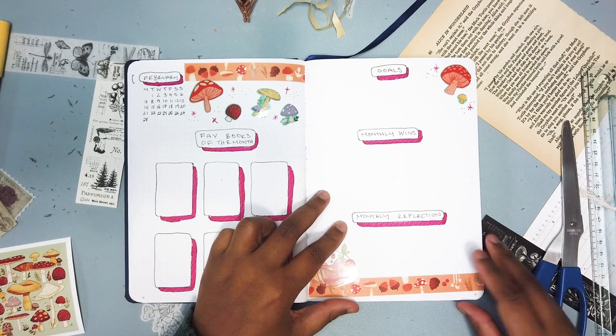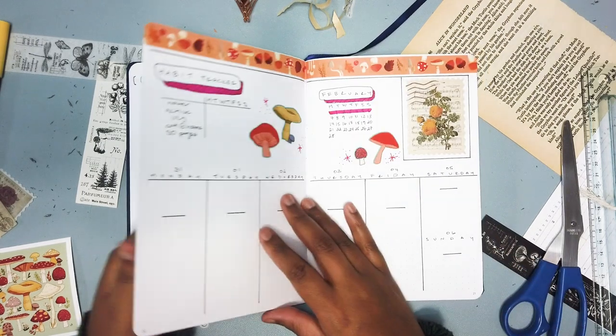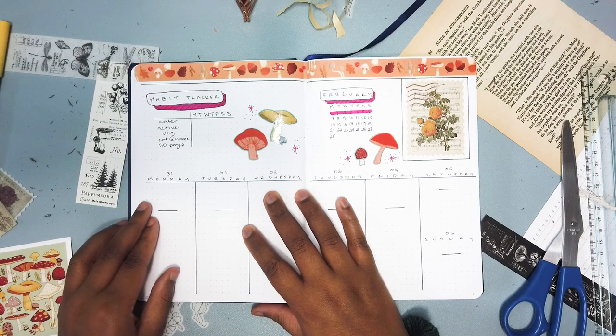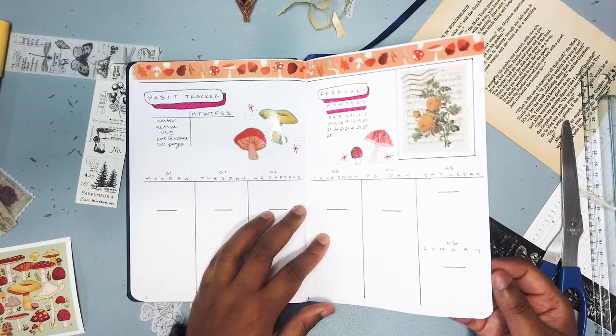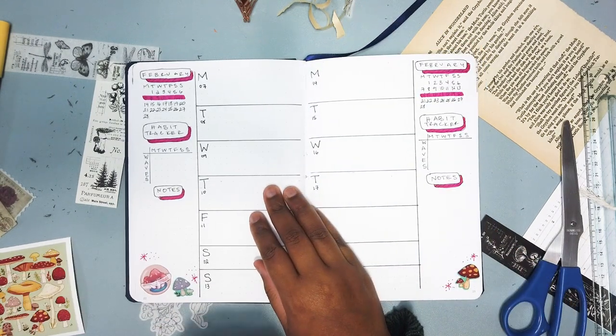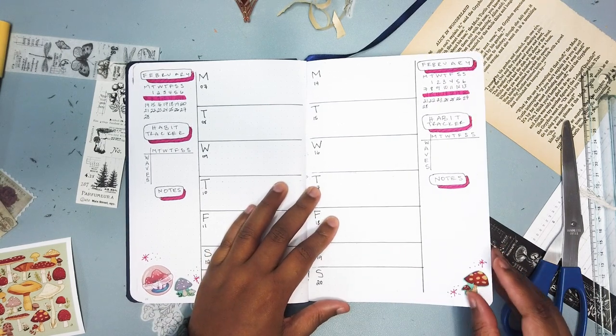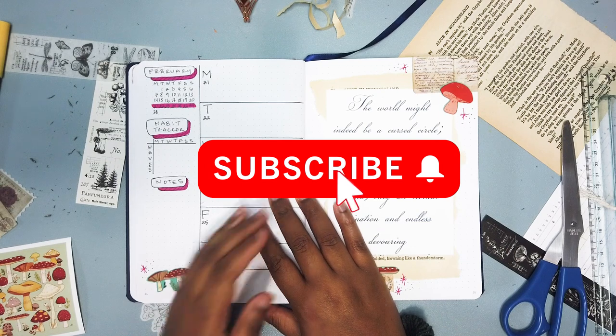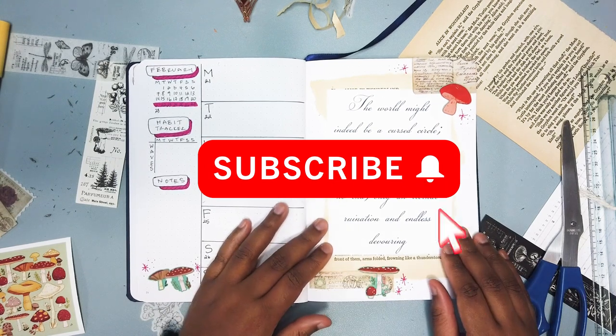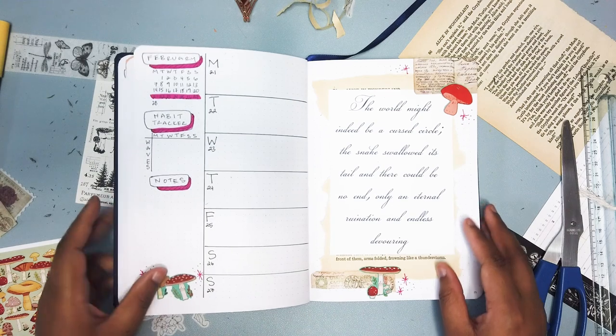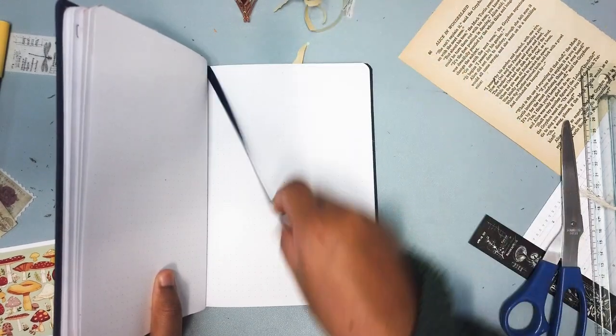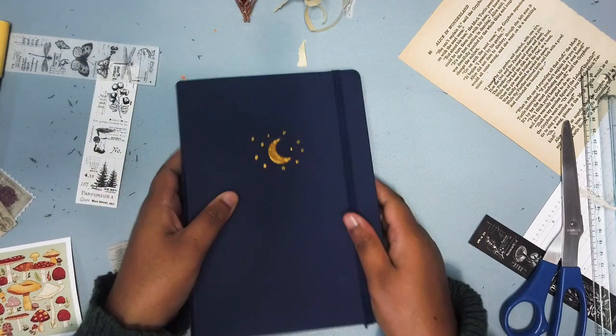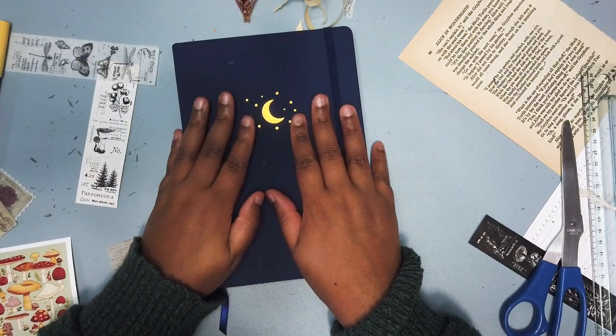So next time I think I'll do a spread where I can incorporate stickers but also do a bit more drawing and illustration so it feels a little bit more creative for me. But if you like this video please give it a thumbs up. If you haven't subscribed already please subscribe, I would really appreciate it. I will be making monthly bullet journal videos so you'll get to see us set up every month and that's about it for this video. Thank you so much for being here with me and for watching, bye.